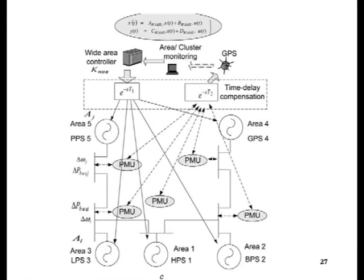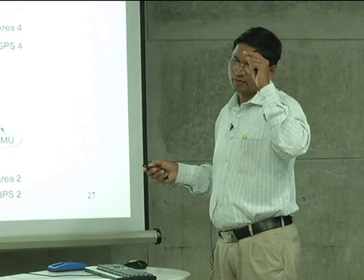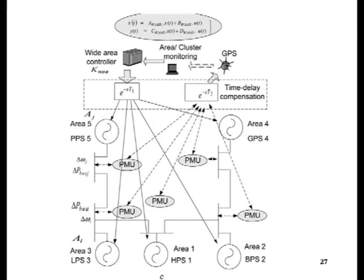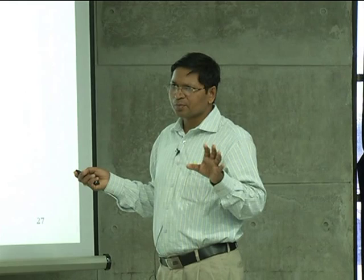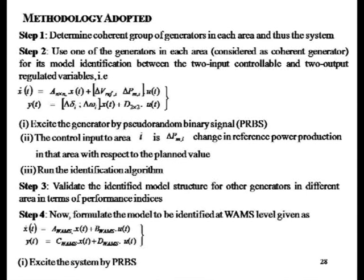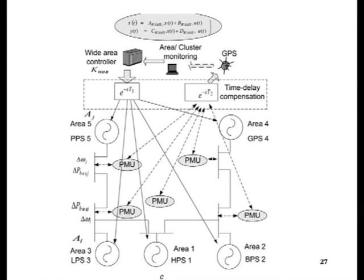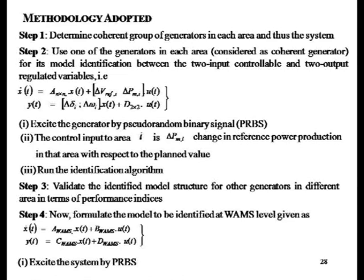When we have the signal transfer — the signal being sent from the bus bar through PMUs to the centralized level — there would be a delay. That delay could be in fractions of 10 milliseconds — it has been observed at 10 milliseconds, 15 milliseconds, 20 milliseconds delay. That part has to be taken into account when you want to have the controller design. For monitoring purposes, the delay is not very important, but for controller design it has significance. The first step is obtaining the coherency; the second step, selecting one generator from each area as the equivalent model.